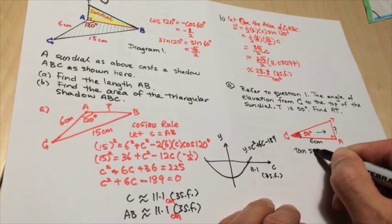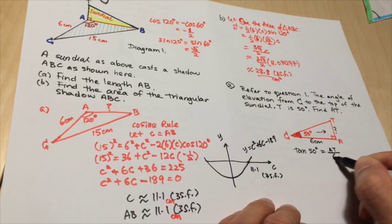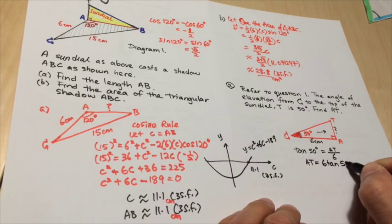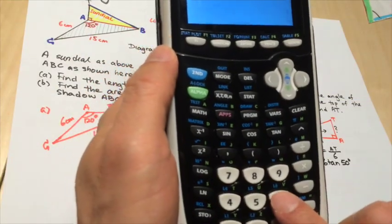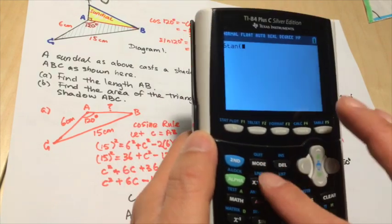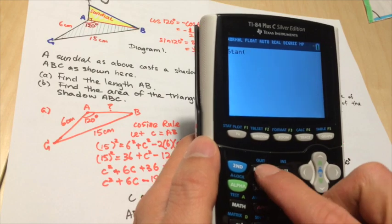So tangent 50 degrees is equal to AT over 6. So AT itself is 6 times tangent 50 degrees. So press 6, right? And then press tangent. And make sure that your mode that you are actually working in degree. So let's check our mode again.